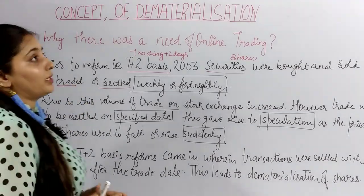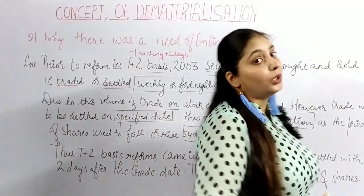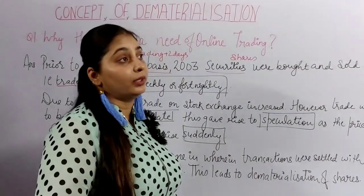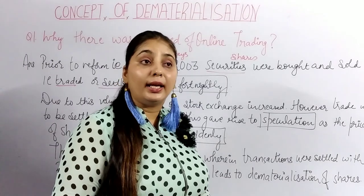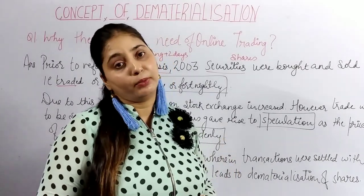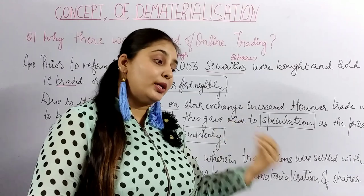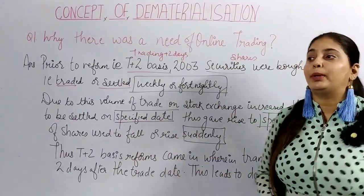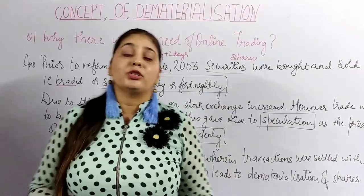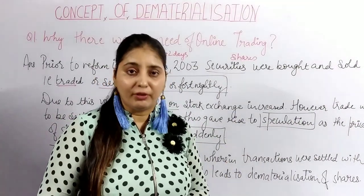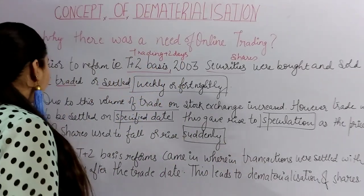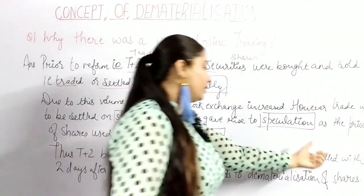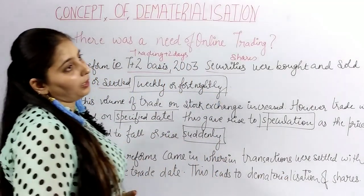Because of these sudden and unexpected speculations — where share prices would rise or fall sharply — it created confusion in the minds of shareholders about whether to invest in those shares or not. That is why in our country most people do not favor trading in shares, due to lack of transparency of information. This is why the T plus 2 basis reform came in, wherein transactions were settled within 2 days after the trade date.